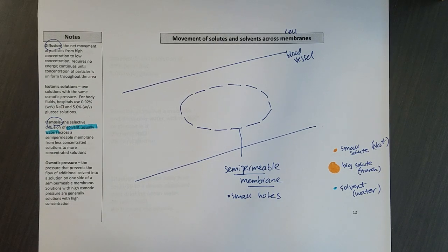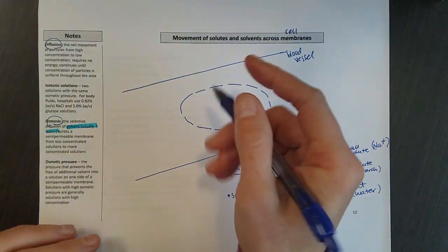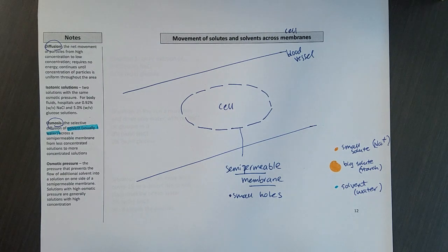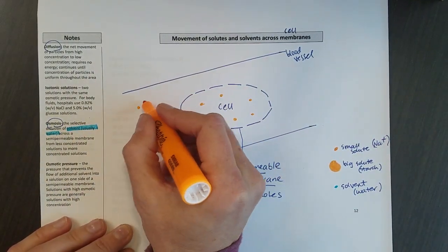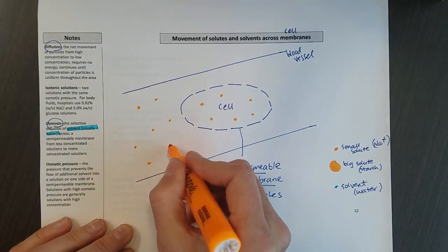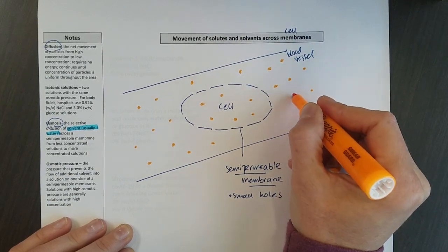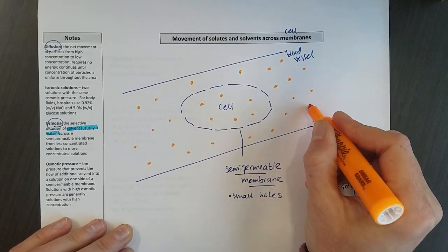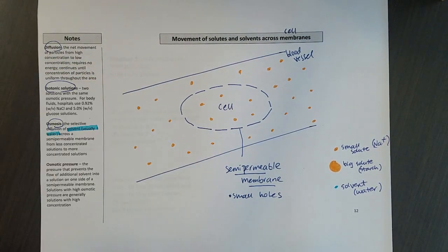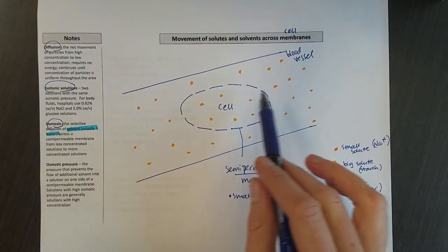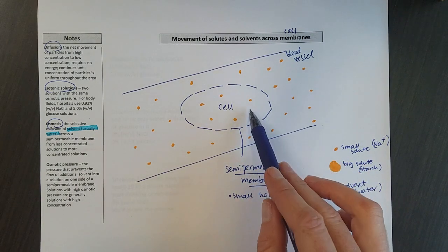If I add some of these solutes in here, inside of the cell - so this could be any cell, we'll talk a bit about red blood cells on the next slide - but we're going to have some solute like sodium. And then we also have sodium out in our blood vessels. And I'm going to try to roughly make the concentrations look the same inside and out. When the concentrations look the same across the whole picture, that's called an isotonic solution.